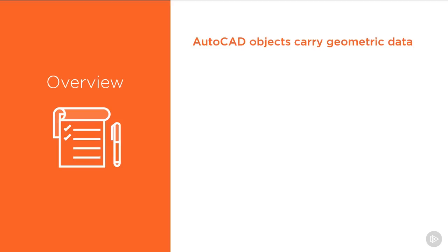All AutoCAD objects carry a rich set of geometric data. Lines have a specific start and end point, with precise x, y, and z coordinates within AutoCAD's model space.